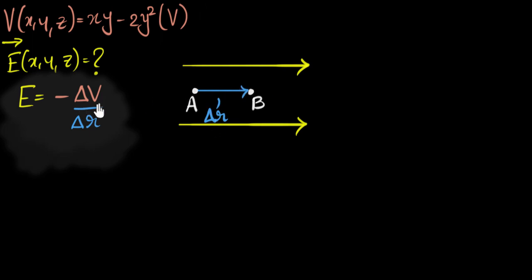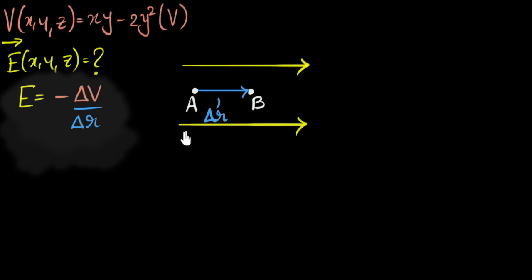That ratio — the negative ratio of how much the potential is dropping per meter — will tell you what the strength of the electric field is. If you're not familiar with this, we've talked about it in great detail in previous videos, so feel free to go back and check that out.